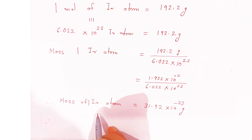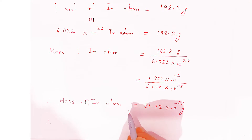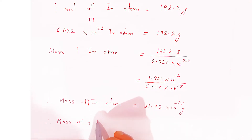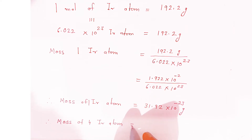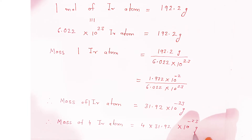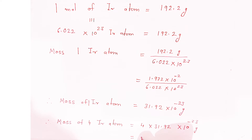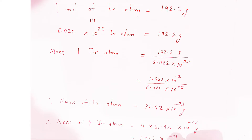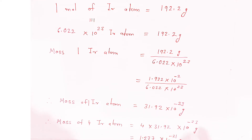Since FCC contains 4 iridium atoms, the mass of 4 iridium atoms = 4 × 31.92 × 10⁻²³ grams. When you multiply, it becomes 1.277 × 10⁻²¹ grams (shifting the decimal). This is the mass of 4 iridium atoms.